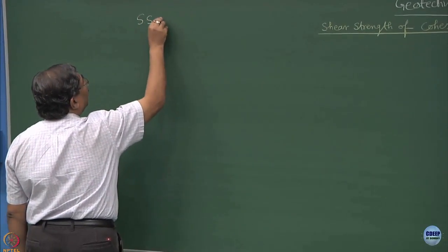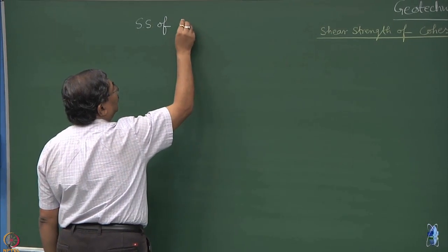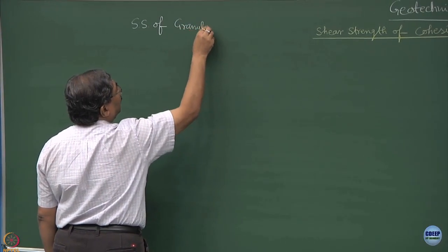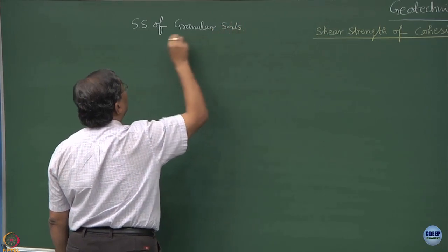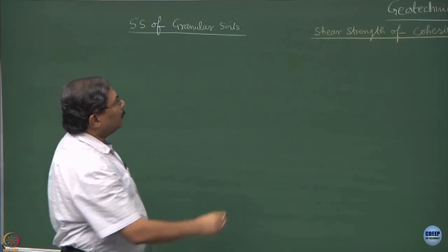In last few lectures, I have talked about determination of shear strength of soils and we have emphasized more on the coarse grained soils, fine sands and we have not talked much about the cohesive soils. So when we talk about the shear strength characteristics of soils, normally we divide them in two parts: the shear strength of granular materials or granular soils and shear strength of cohesive soils.